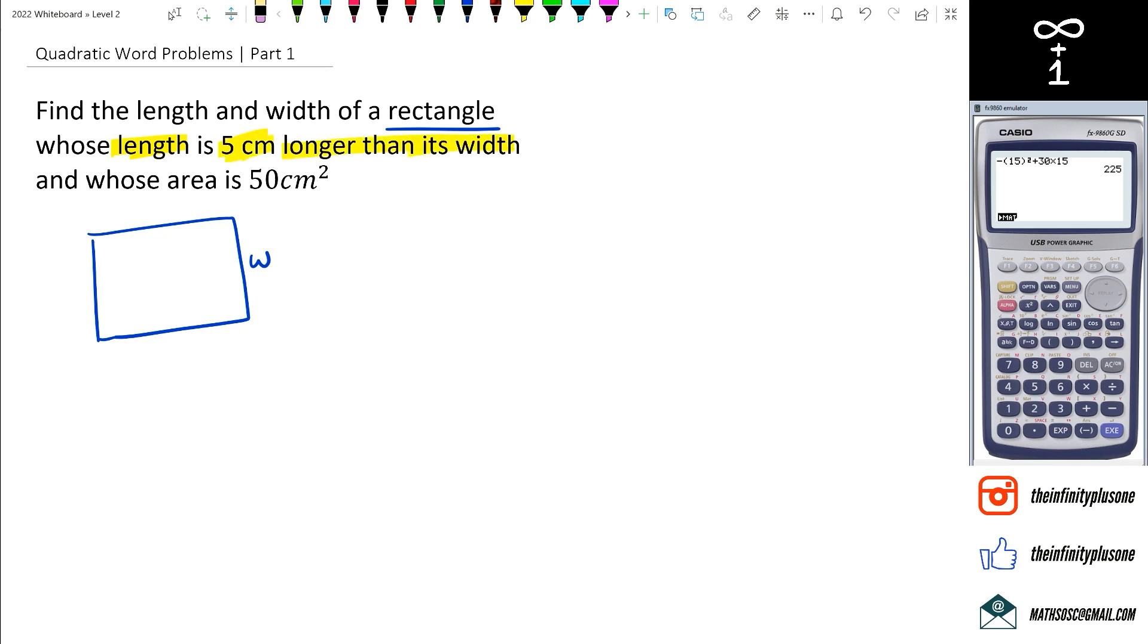The second part of it is that we've actually got area is equal to 50 centimeters squared. Now we know that area of a rectangle is equal to base times height, or in this case we can actually say length times width. So we can say area is equal to 50, and then length is equal to w plus 5 multiplied by w which is the width itself.